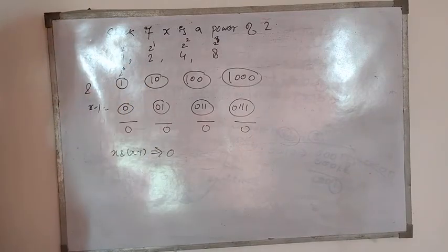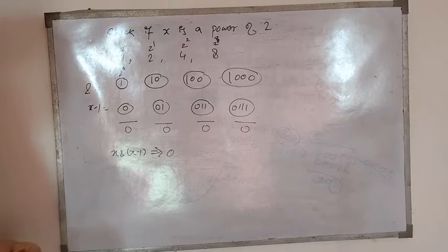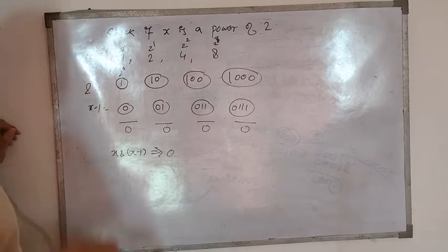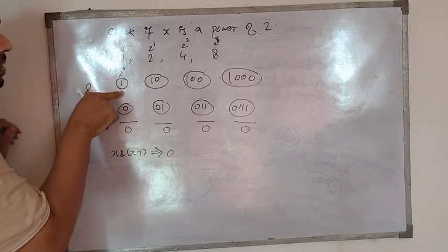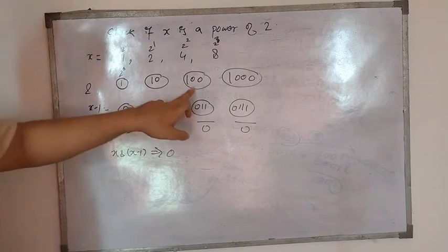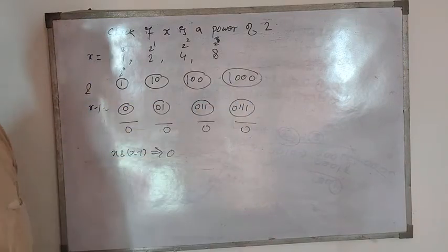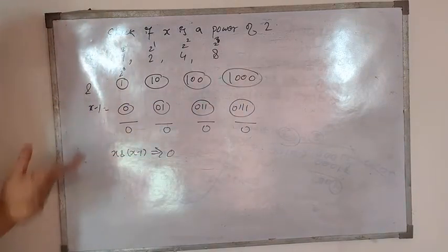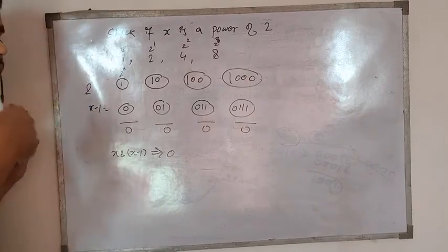Let's check how we represent binary numbers as powers of 2. 2 to the power 0 means 1. 2 to the power 1 is 1,0. 2 to the power 2 is 1,0,0. And this is the representation of 8 in binary.